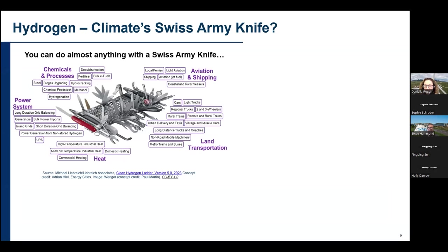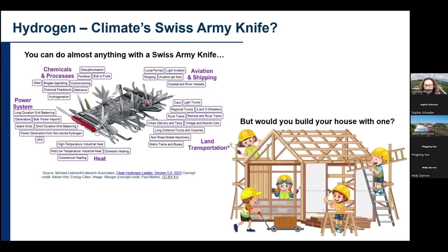Just to remind everybody, we talked in the last webinar about hydrogen often being considered a climate Swiss army knife. That's really because hydrogen can be used for a number of applications — from aviation and shipping to chemicals, processing, power systems, transport, and heating applications. It's a very diverse, flexible energy carrier that really offers a lot of opportunities, even as a drop-in fuel. But the real question is: should we use it for everything? If you're building a house, would you use a Swiss army knife, or might there be more appropriate tools? Throughout this webinar series we're trying to help you understand when hydrogen is the best and most cost-effective tool for the job.